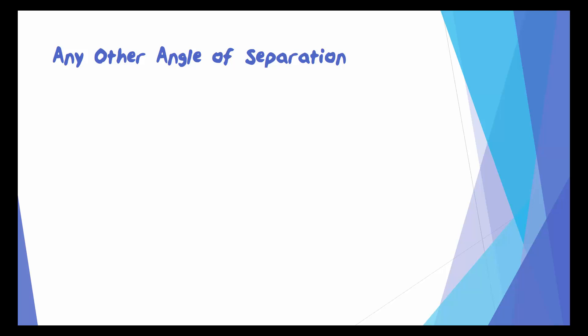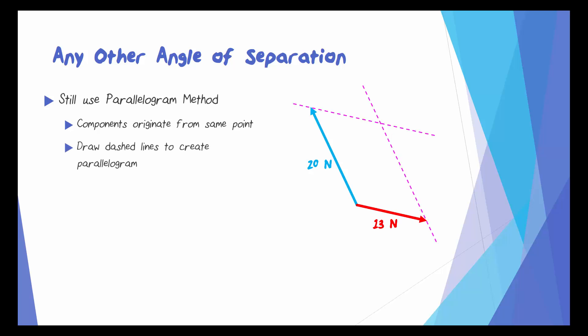Finally, let's look at what happens at any other angle of separation. Well, for this, we'll also use the parallelogram method. So we want to make sure that the components originate from the same point. We want to draw dashed lines to create a parallelogram just like that. And then we want to draw the resultant that is the diagonal of the parallelogram.